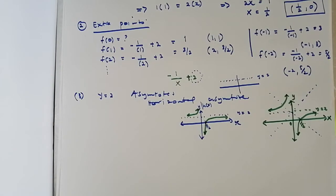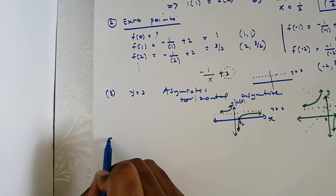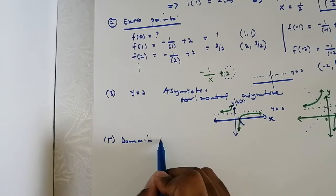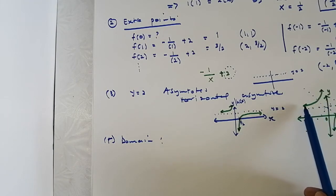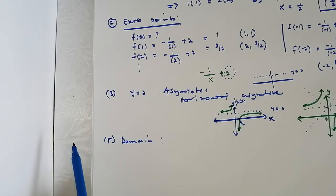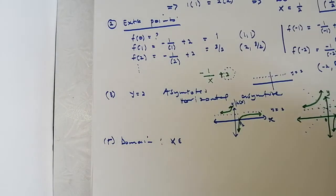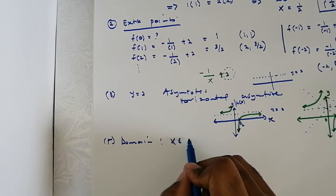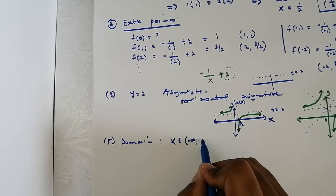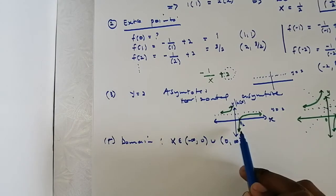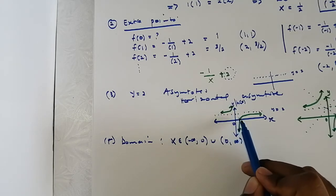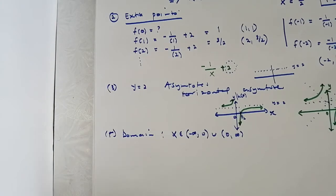You might be asked to find the domain of the function. The domain is where your function exists horizontally — where it is defined. Looking at this function, it continues from negative infinity but at x equals zero the function is undefined, then it continues again to positive infinity. So the domain is x element of negative infinity to zero, union zero to positive infinity — excluding zero because the function is undefined there.